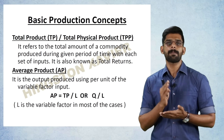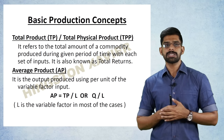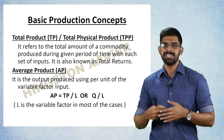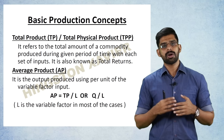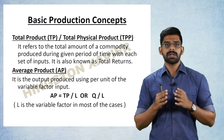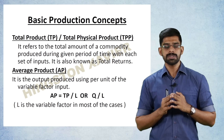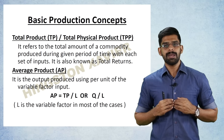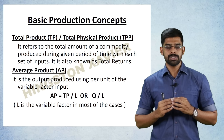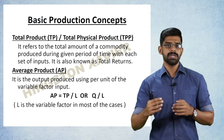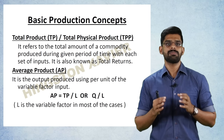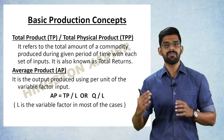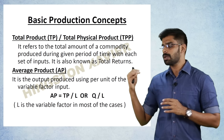Before moving into the theory portion, you need to get familiar with the basic production concepts. The basic production concepts include three concepts. The first is Total Product (TP) or Total Physical Product (TPP). It refers to the total amount of a commodity produced during a given period of time with each set of available inputs — the maximum quantity of output produced. This is also called Total Output or Total Returns.